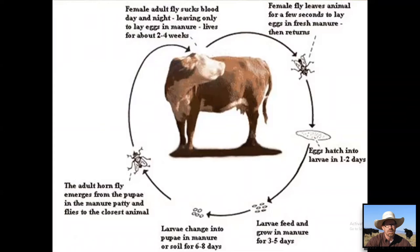To manage horn flies, we need to understand their life cycle and how to disrupt it. Adult flies stay on cattle about 24 hours a day, only leaving to deposit eggs in manure. When they leave the cow, they lay eggs in fresh manure and quickly return to the host. Those eggs hatch in one to two days, the larvae grow in that resource-rich environment, then change into pupae in the manure.